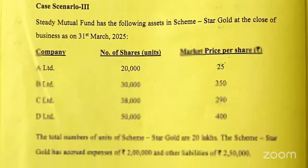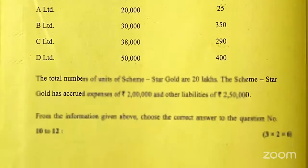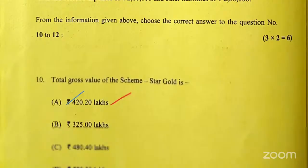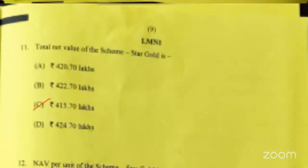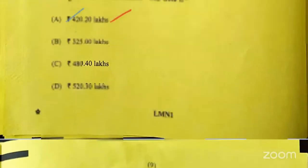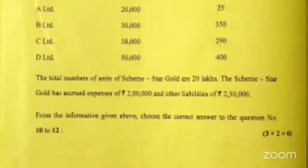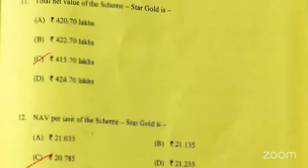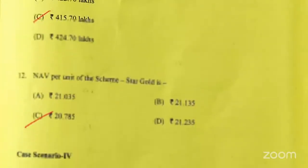Then coming to case scenario three, which is on mutual funds. This is a fairly simple one. The gross value is A, which is 420.2 lakhs — very simple. Then net value: from 420 you subtract the accrued expenses and other liabilities, and you'll get 415 point something seven. Then divide that by 20 lakh units and you'll get 20.785. So the answer is C.